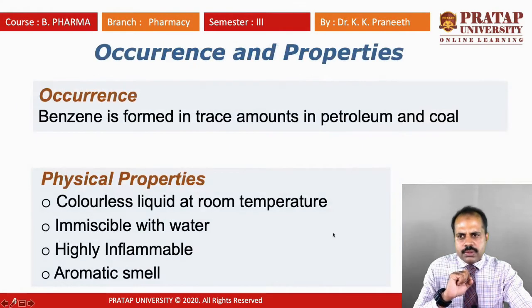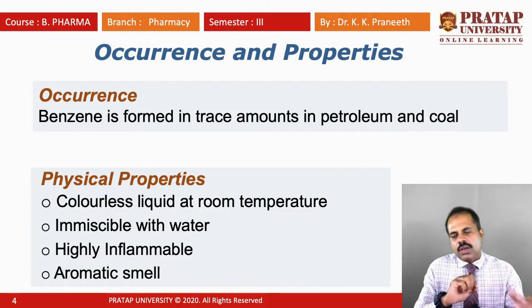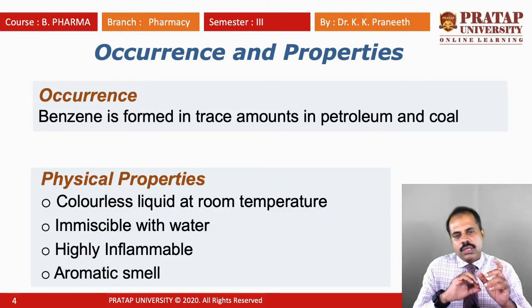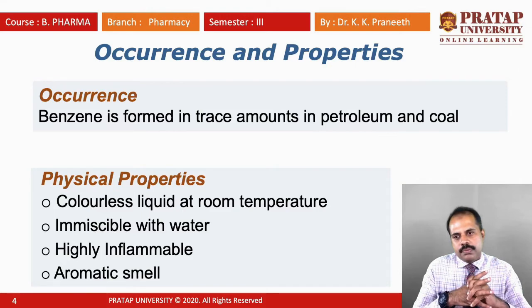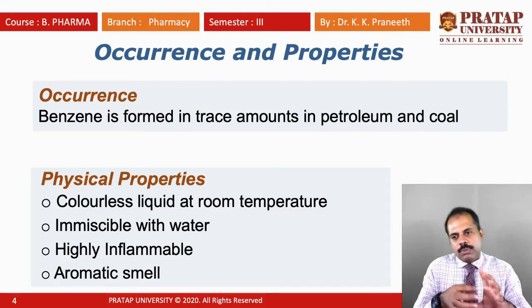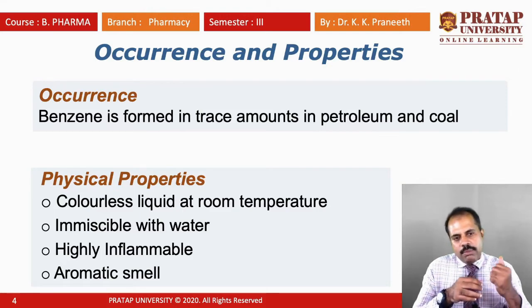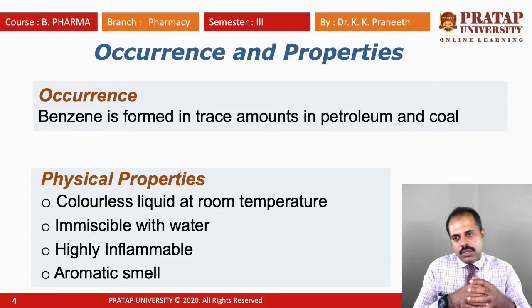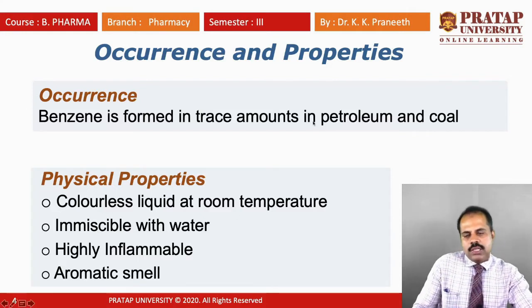Benzene occurs in trace amounts in petroleum and coal. It is a byproduct which is obtained when we extract petrol and coal — benzene is also a byproduct. This is its natural occurrence.